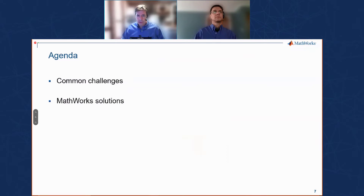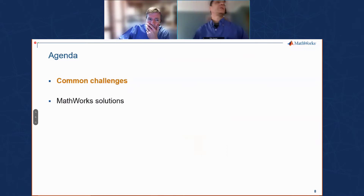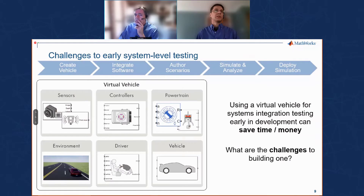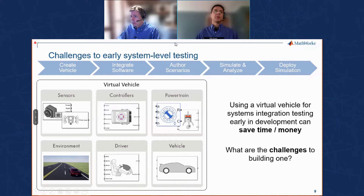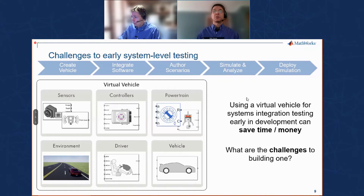Now let's describe some common challenges with virtual vehicle simulations. A virtual vehicle consists of chassis, powertrain, driver, controller, sensor, and environment — all pieces that together form a virtual vehicle. The workflow steps along the top show how you step through different portions to do something interesting with the model. Once you have the model, you can front-load a lot of your development activities, which is what brings in the savings on time and money.